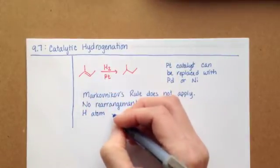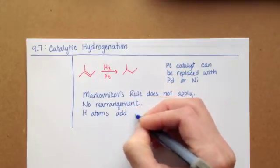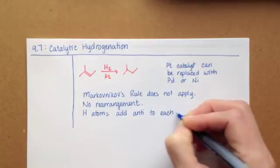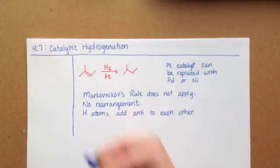anti-to-each-other. And this will produce some specific stereoisomers in the products, assuming that we have chiral carbons.